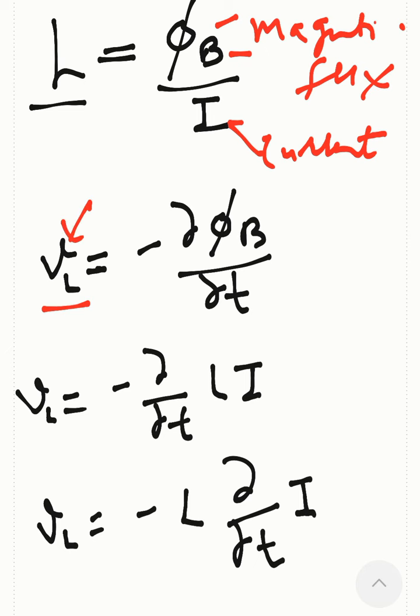as the rate of change of magnetic flux with a negative sign, so minus d/dt times phi B. Since phi B is the product of inductance L multiplied by current I, we